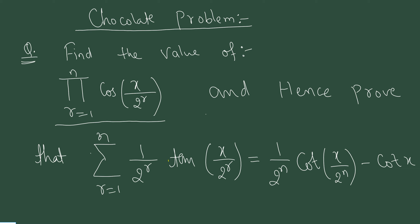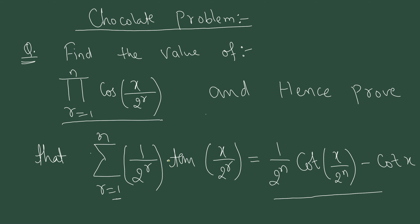The question is: we have to find the value of the product for r = 1 to n of cos(x / 2^r). After finding this value, we have to prove that the summation for r = 1 to n of (1/2^r) · tan(x/2^r) equals (1/2^n) · cot(x/2^n) − cot x. You can pause the video and try it yourself before watching the solution.